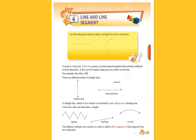A line is a group of points joined together that extends endlessly in both directions. So line kya hai? It is a group of points. Points ko ka mla ke kya hai? Ek line banty hai jo extend ho sakti hai do no sites pe.